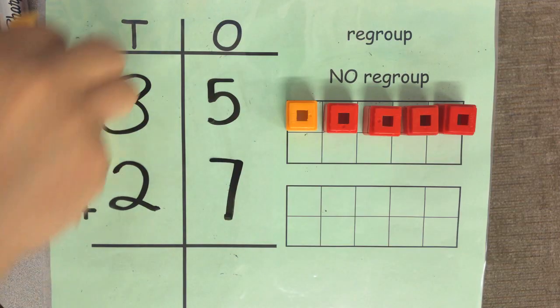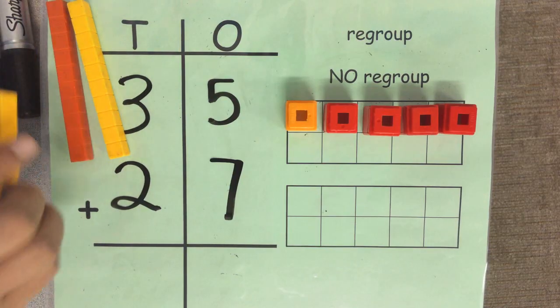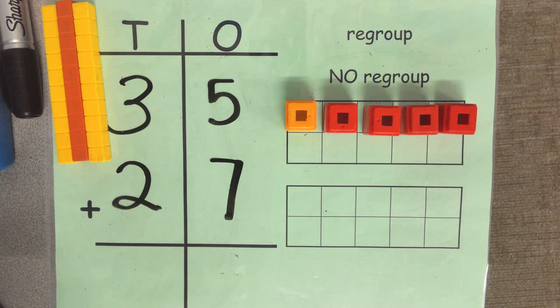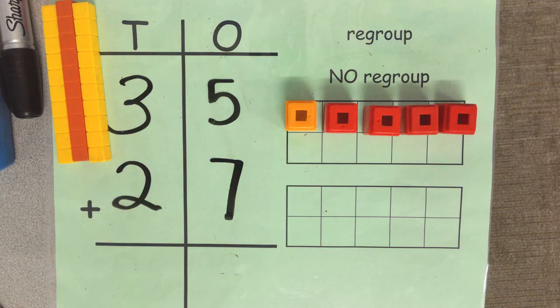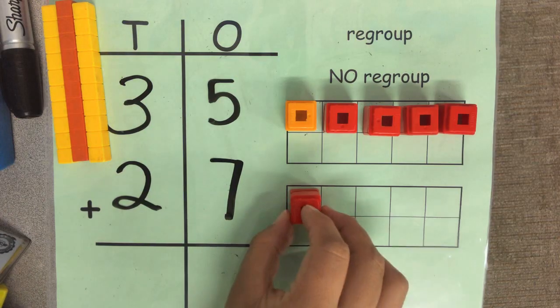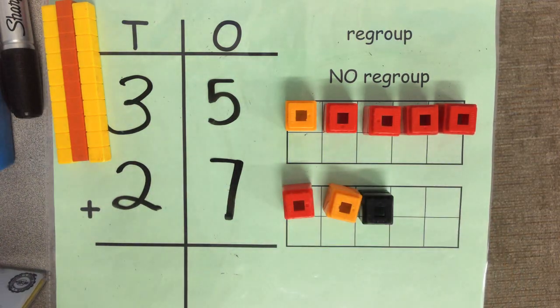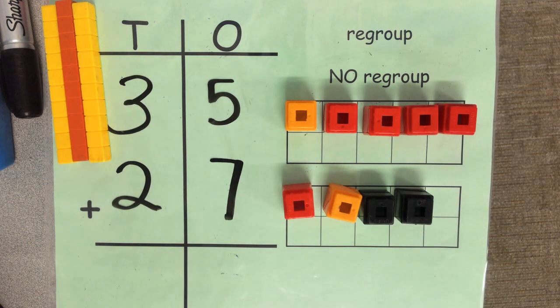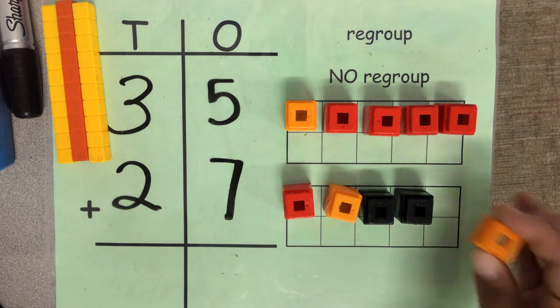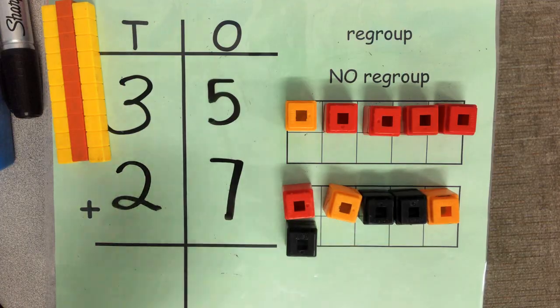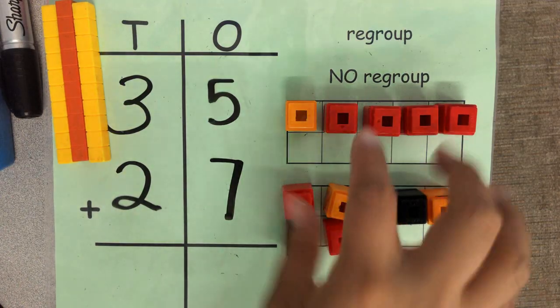Well, then we build the bottom number. How many groups of ones? Seven. So let's make seven: one, two, three, four, five, six, seven. You know what, looking at these because they're in groups of five with the ten frame, I can tell that I'm making a group of ten already.